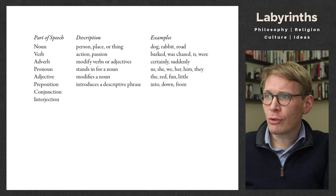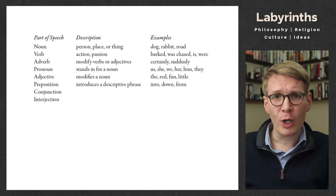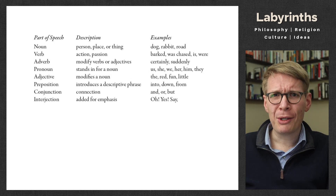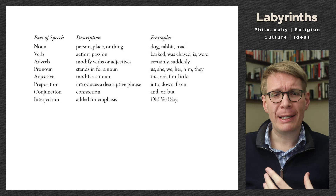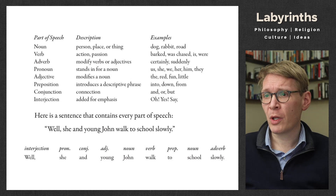Prepositions introduce a descriptive phrase. Into, down, and from are examples of prepositions. These are really important connectives that enable us to construct more complex sentences. The same can be said of conjunctions, which bring together various clauses or portions of a sentence, including and, or, but. And then there are interjections — oh, yes, say. These are examples of words that just add flavor, but they might be important in rhetoric to add energy to a sentence. From Hauser, we have an example of a sentence that includes every part of speech.